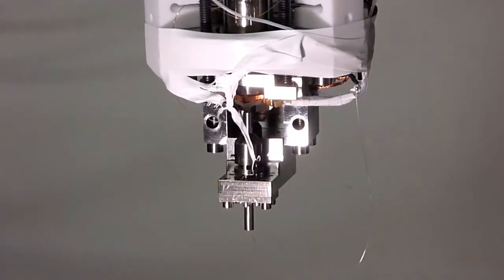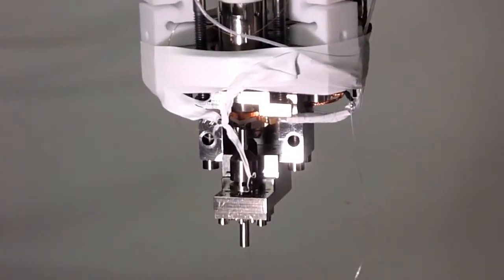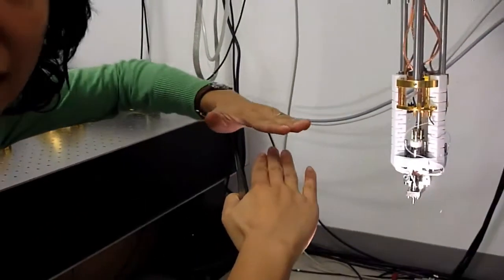So basically, we're in the configuration that here is the sample, and the tip goes like this. And we scan while the sample moves, and the tip keeps static.